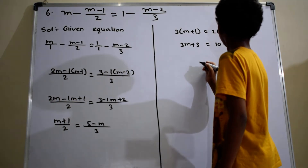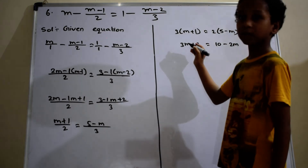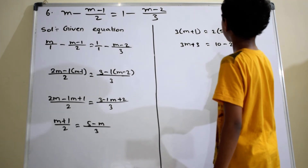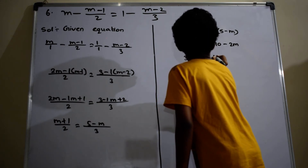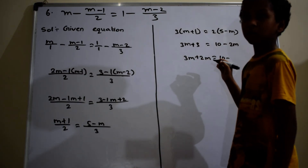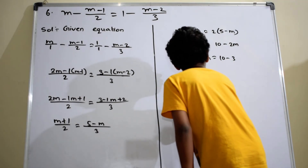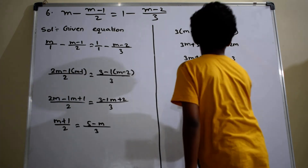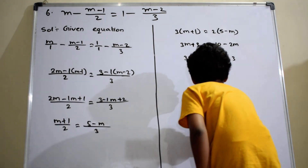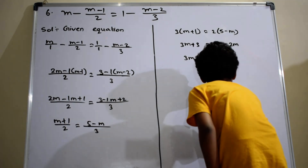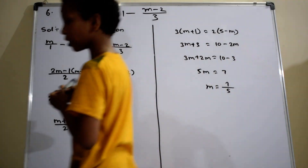In this step I am transposing minus 2M to the left hand side and plus 3 to the right hand side. Then it becomes 3M plus 2M equals to 10 minus 3. So 3M plus 2M equals to 5M equals to 7. Therefore M equals to 7 by 5. There is no common divider, so M equals to 7 by 5. Thanks for watching.